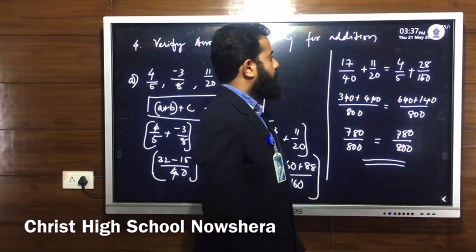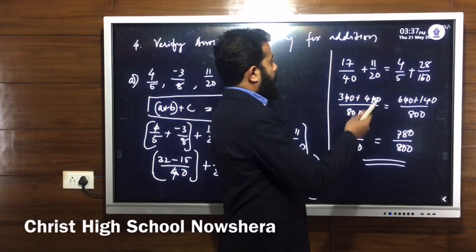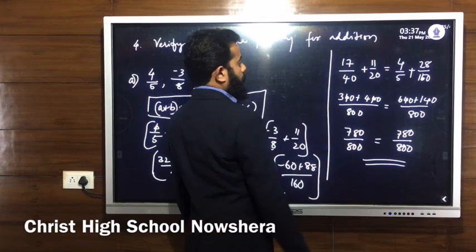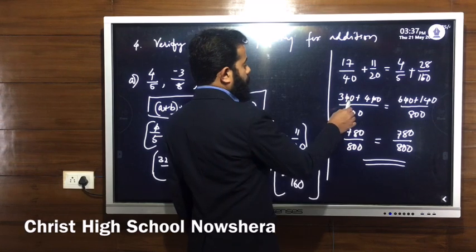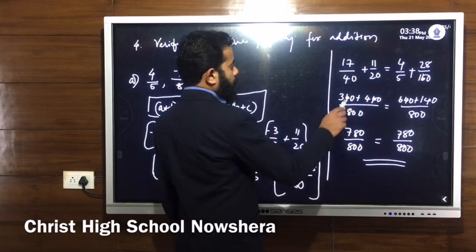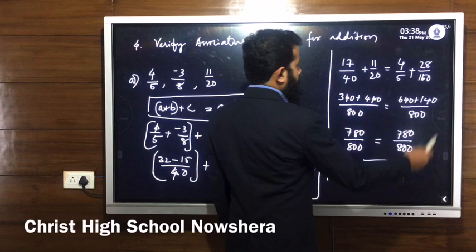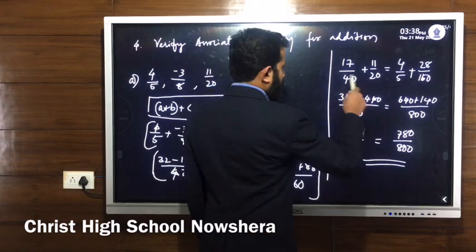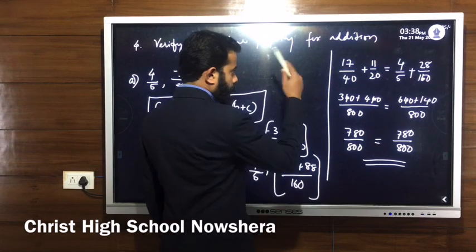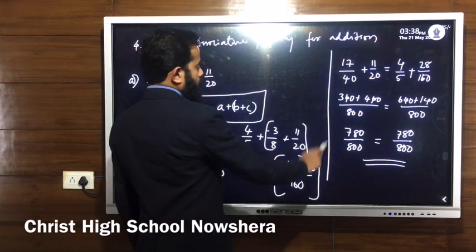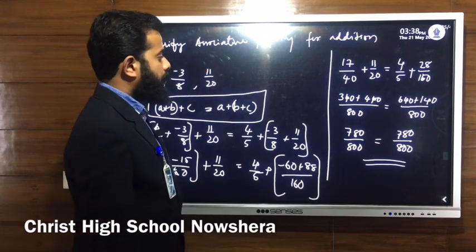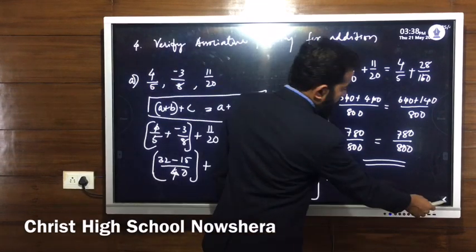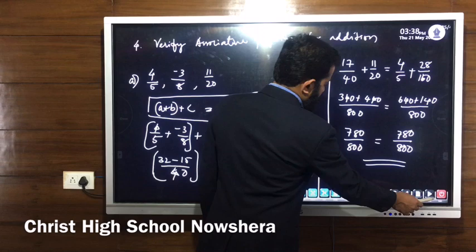Then 11 by 20 remains on the left side and 4 by 5 remains on the right side. Cross multiplying again: left side gives 340 plus 440 divided by 800 = 780 by 800. Right side gives 640 plus 140 divided by 800 = 780 by 800. LHS is equal to RHS.